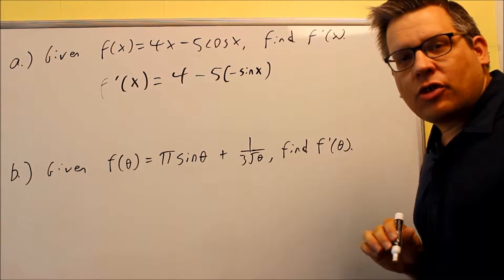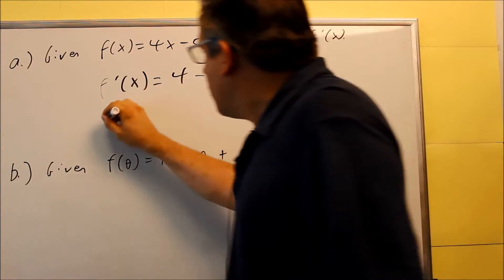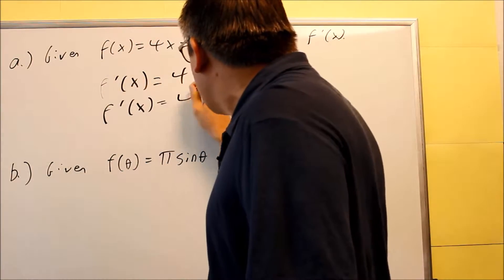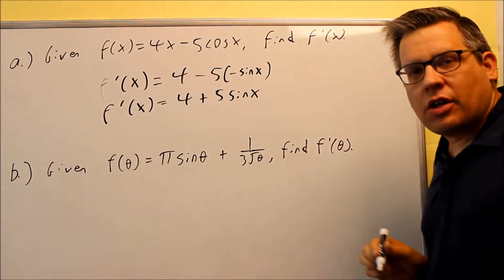So again, that was from the definition we just talked about in the previous video. And then the last thing you're going to do is simplify it. So 4 + 5sin(x) and then that would be it. That's your derivative.